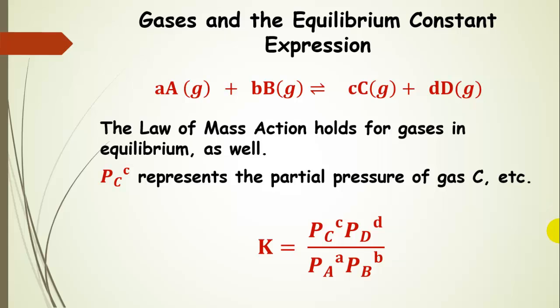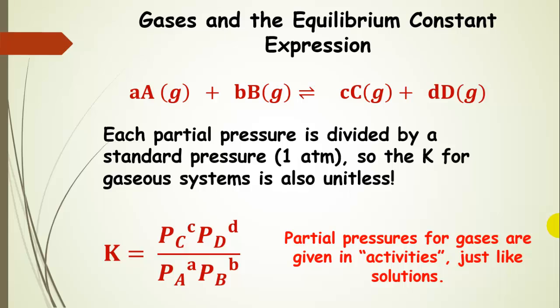The law of mass action holds for gases in equilibrium just as it does for solutions. For gaseous reactions, P is the partial pressure of a reactant or product raised to its coefficient power. Partial pressures are activities as well — all partial pressures have been divided by a standard pressure of one atmosphere. So the equilibrium constant K for gaseous systems is also unitless because we are using activities.